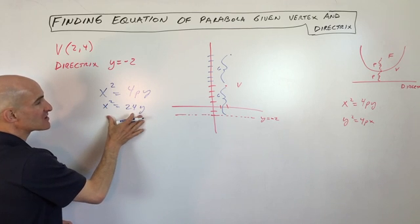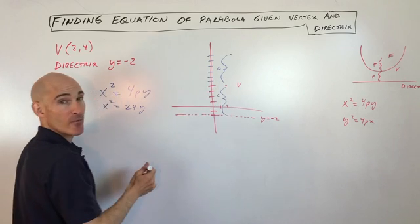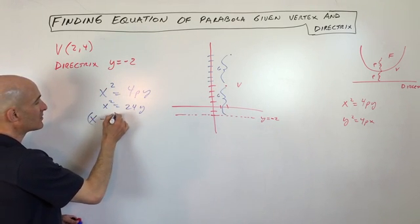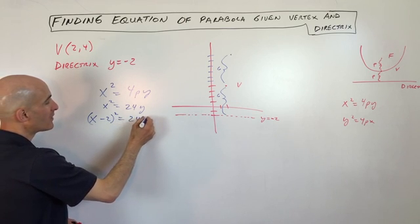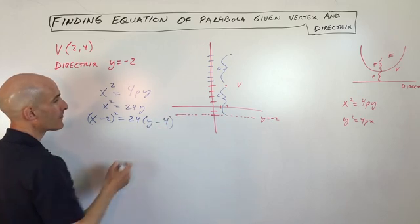But this is if it's centered at the origin. This has been shifted to the right 2 and up 4. So this is actually going to be x minus 2 squared equals 24 times y minus 4.